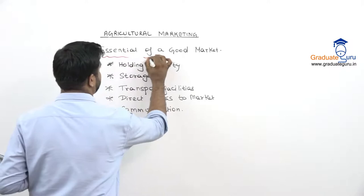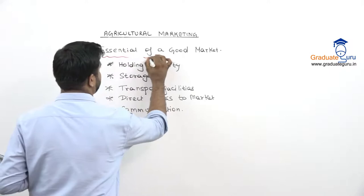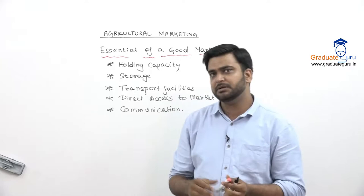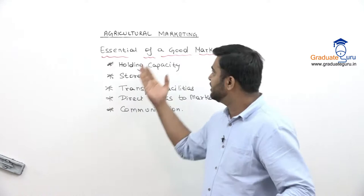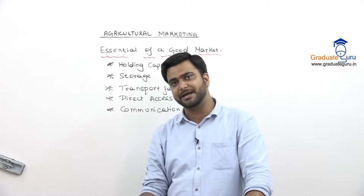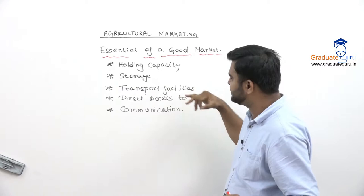The next topic is essentials of a good market — what requirements are needed for a good market. For farmers to get remunerative prices, you need to have a good market where you can sell and farmers can get a good commodity price. The points are: holding capacity and storage, transport facility, direct access to market, and communication.